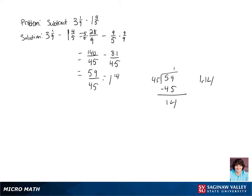So our long division gives us the answer of 1 remainder 14, so we can get our final answer of 1 and 14 45ths.